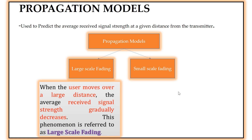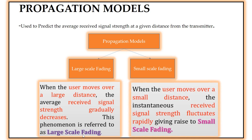What do we mean by large-scale fading? When the user moves over a large distance, the average received signal strength gradually decreases — this phenomenon is referred to as large-scale fading. For longer distances, the signal decreases. What is small-scale fading? When the user moves over a short distance, the instantaneous received signal strength fluctuates rapidly, giving rise to small-scale fading — it is just the reverse. These are the propagation model types.